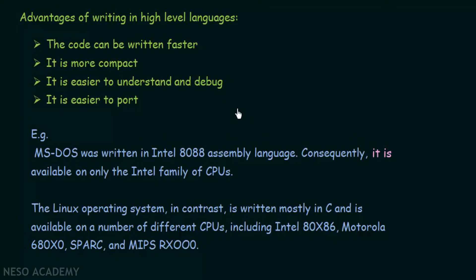That was about the implementation of your operating system. We discussed designing, policies, mechanisms, and implementation. Designing an operating system is a vast task — there is no particular textbook that tells you how to specify and achieve all design goals. Depending on the kind of requirements and the kind of system you are developing, you will need to use your creativity to design it in the best possible way.